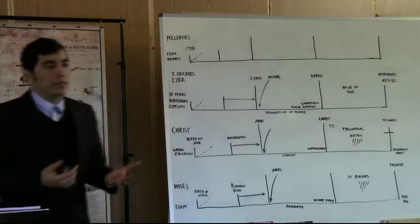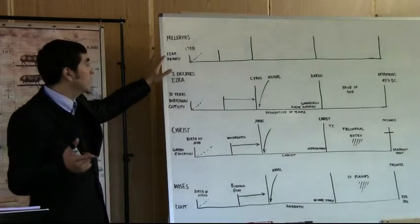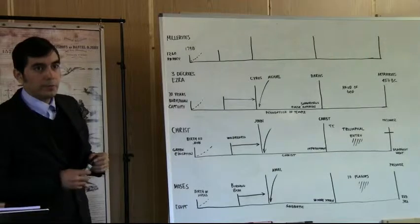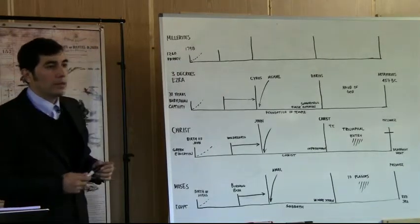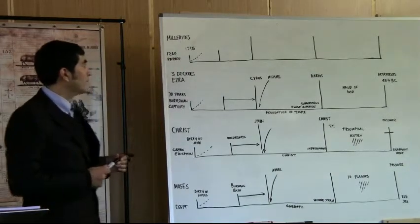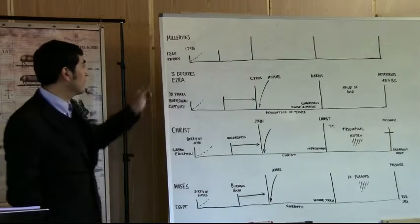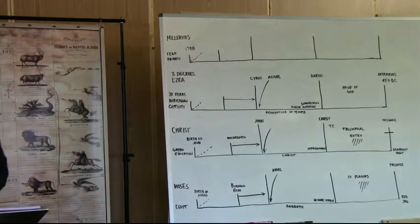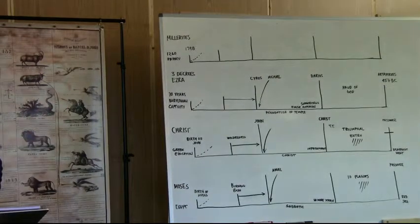This 1260 years ended in the year 1798, which we know is the end of several time prophecies. Can you give me one example? We have the 1260 years, the time, times, and a half. What other time prophecy ended in 1798? The 1290 for the northern tribes ended in 1798. The 1290 from 508 to 1798. And there's another prophecy - Daniel 11:35. So we have some examples. That's a very important marking in prophetic history.